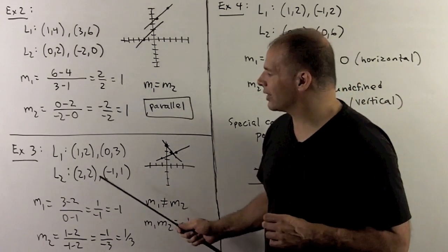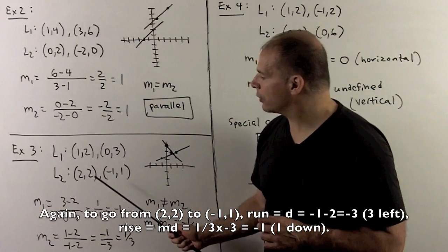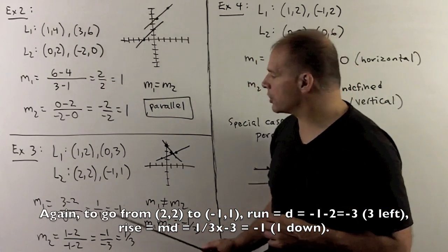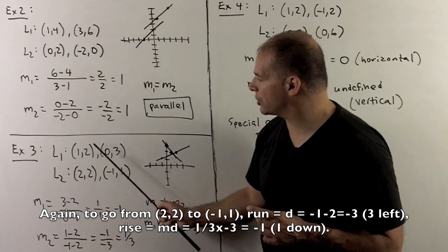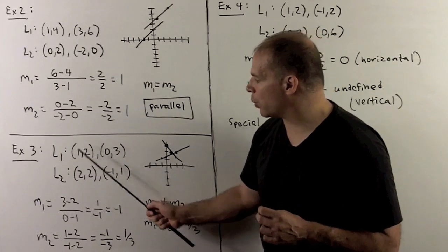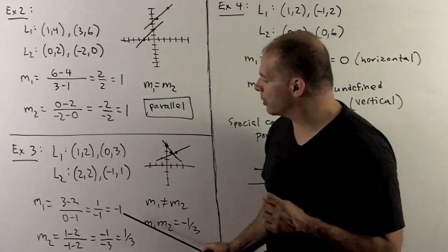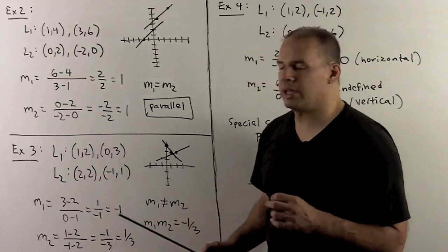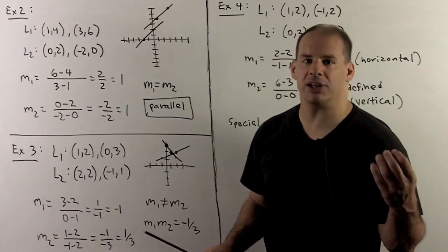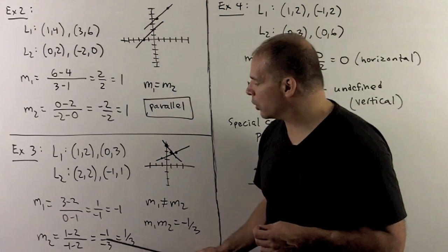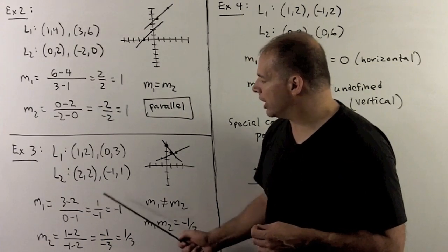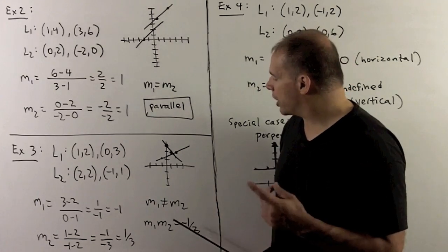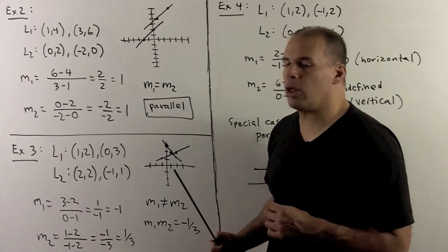Next example: the line through (1, 2) and (0, 3), and the line through (2, 2) and (minus 1, 1). First slope: change in y is 3 minus 2, change in x is 0 minus 1, giving 1 over minus 1 = minus 1. Second slope: change in y is 1 minus 2, change in x is minus 1 minus 2, giving minus 1 over minus 3 = one third. The slopes are not equal and their product is not minus 1, so these lines are neither parallel nor perpendicular.